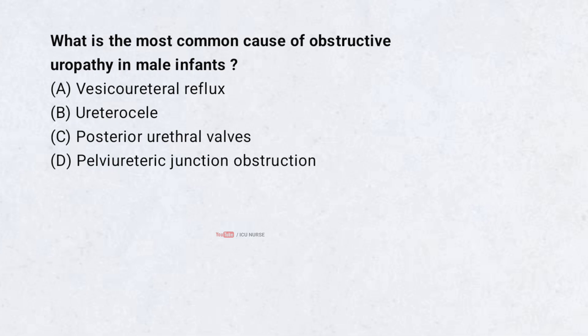What is the most common cause of obstructive uropathy in male infants? A. Vesicoureteral reflux. B. Ureterocele. C. Posterior urethral valves. D. Pelviureteric junction obstruction. Correct answer: C. Posterior urethral valves.